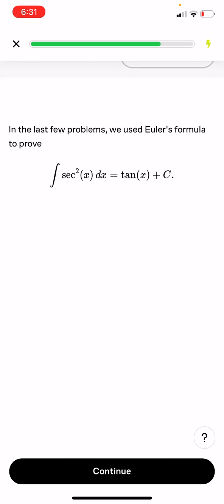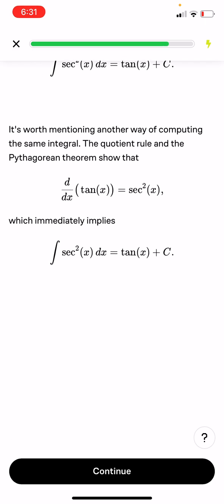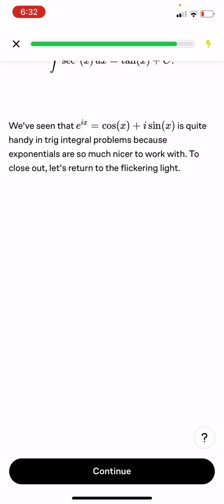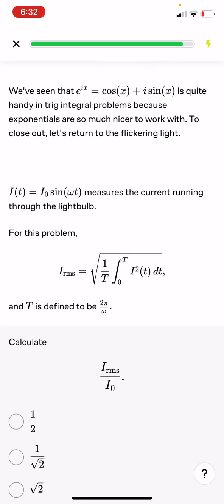In the last few problems we used Euler's formula to prove the sum of sec to the second x dx equals tangent x plus c. It's worth measuring another way of computing the same integral. The quotient rule and the Pythagorean theorem shows that the derivative of tangent x equals sec to the second x, which immediately implies the sum of sec to the second x dx equals tan x plus c. We've seen that e^(ix) equals cosine x plus i sine x is quite handy in trig integral problems. Exponentials are so much easier to work with. To close out, let's return to the flickering light.